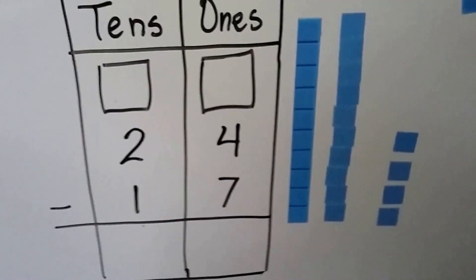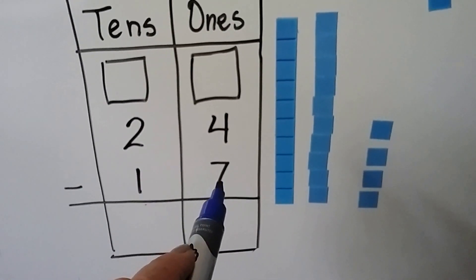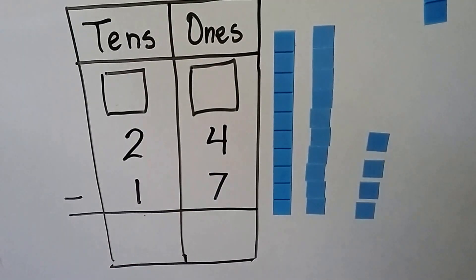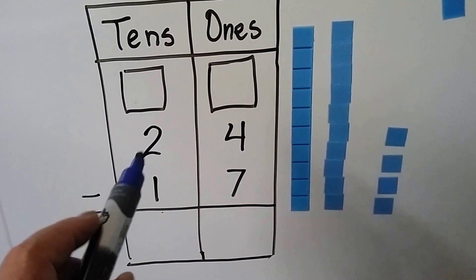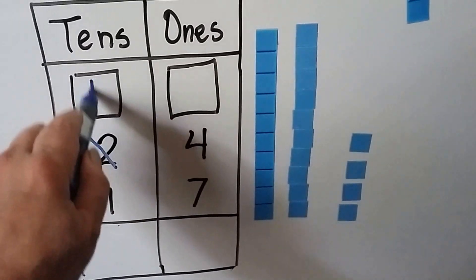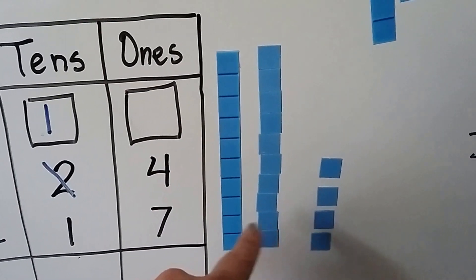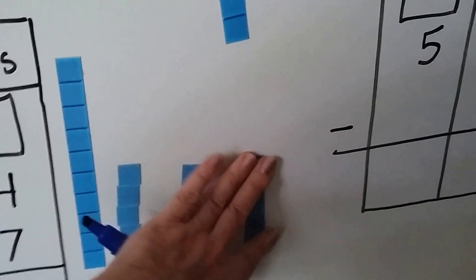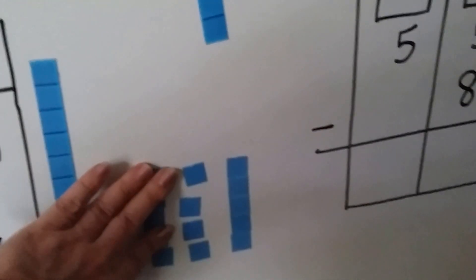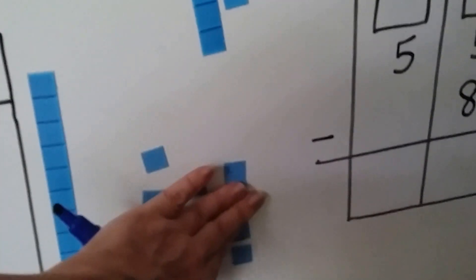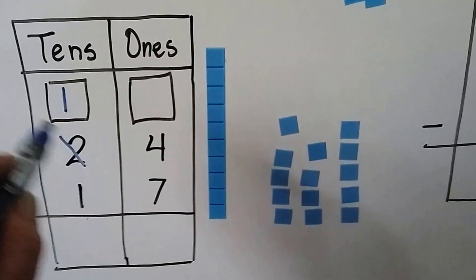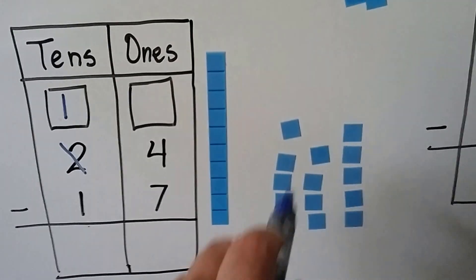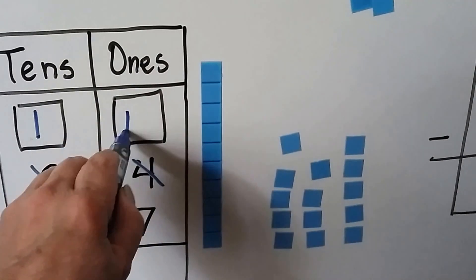Let's try again. We've got 24 minus 17. We look in the 1's place — if the bottom number is larger than the top number, we're going to have to regroup. We can't have 4 and take 7 away. So we're going to take 1 from the 10's place. The 2 is going to become a 1. We take this 10 away from the 10's place and give it to the 1's. Now we have 1 ten and 14 ones.